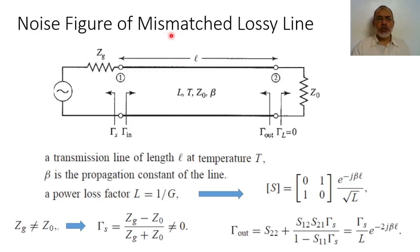In the previous video we studied how to calculate the noise figure for a lossy two-port network. As an example for a lossy two-port network, we are going to discuss a simple lossy transmission line.